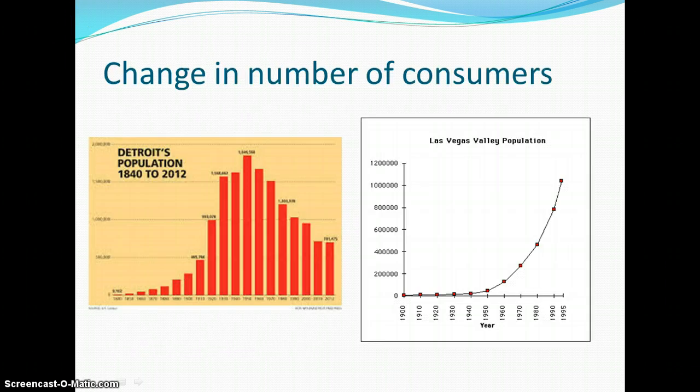Change in number of consumers. Income can make a demand shift left or right, but it's not the only thing. We can also see the change in the number of consumers. If the population goes up — more people moving into a city or an area — what will happen to demand? It goes up because there are more people. So we'll take Las Vegas. Las Vegas was a small town all the way until 1950, then it took off.